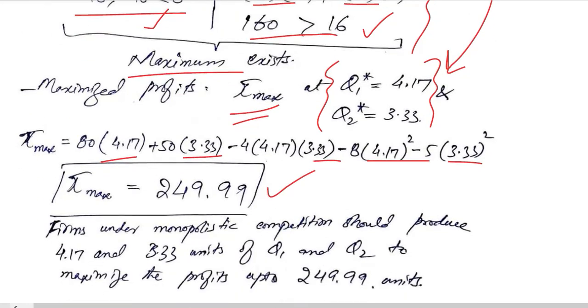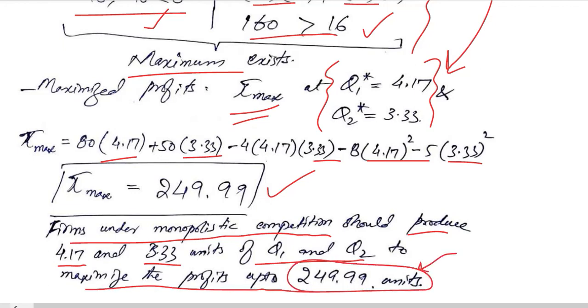So this is the finding, this is the result: the firm under this monopolistic competition should produce 4.17 and 3.33 units of q1 and q2 respectively. And this will allow it to maximize the profit, and that maximized level of profit would be this.